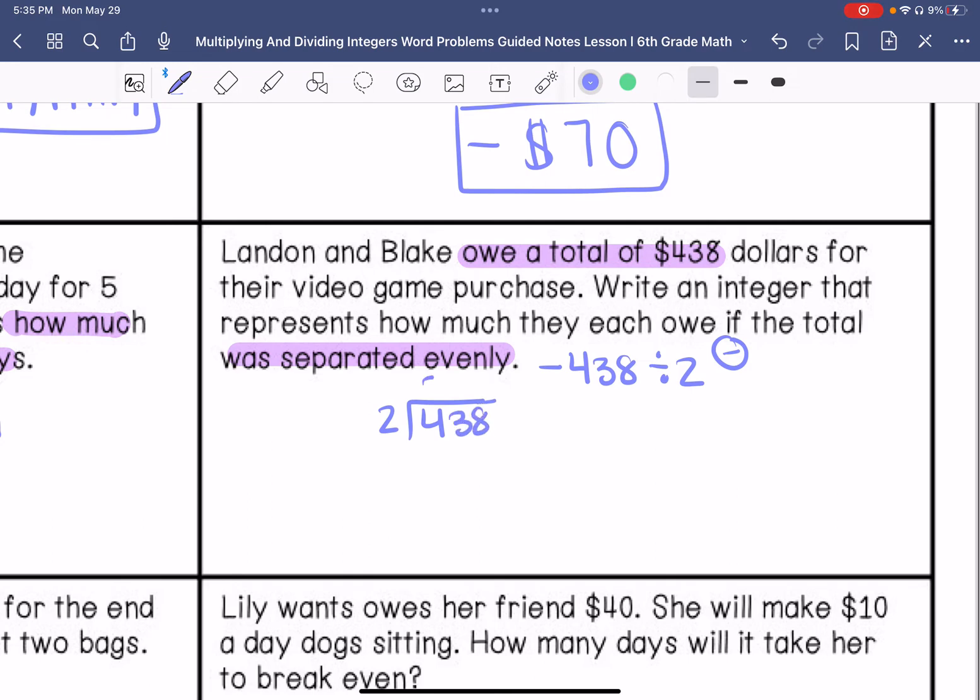2 goes into 4, 2 times. 2 times 4 is 2. Bring down that 3. It goes into 3 once. Subtract those. Bring the 8 down. 2 goes into 18, 9 times. 2 times 9 is 18. So they each owe, so using that negative number, $219.